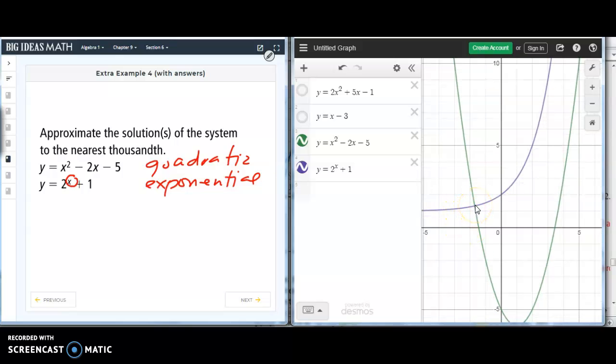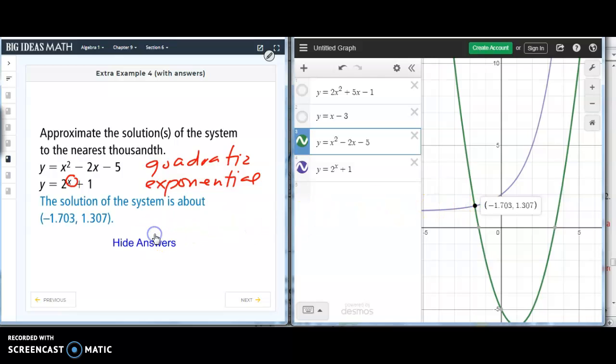So, there is a clear intersection here. So, the approximate value there would be, let's write it down, negative 1.703, comma, 1.307.